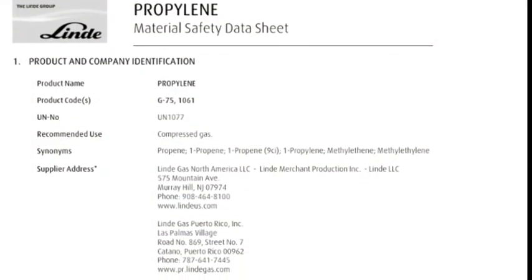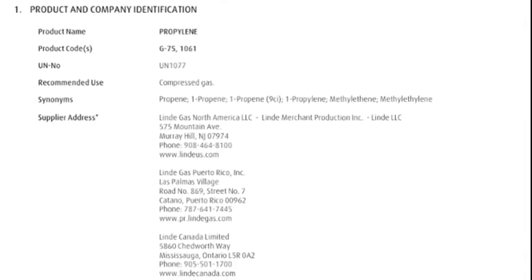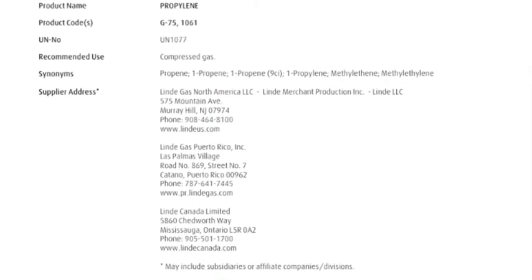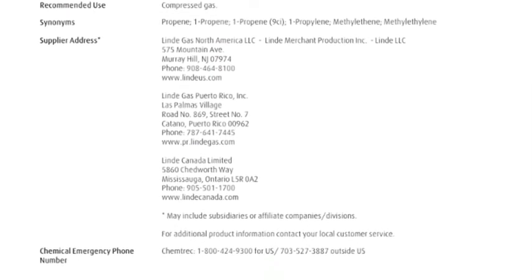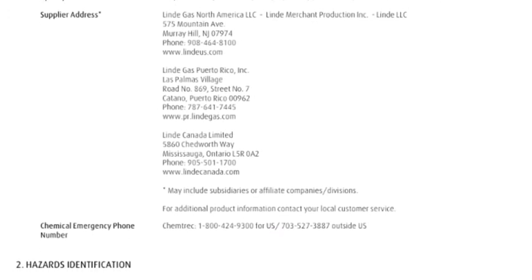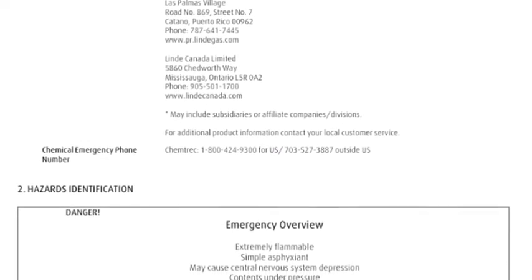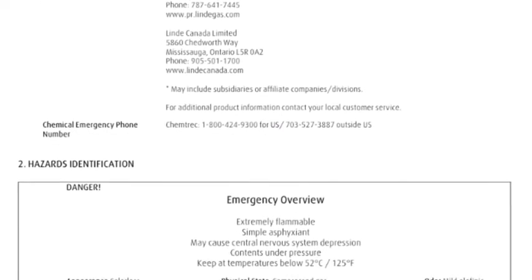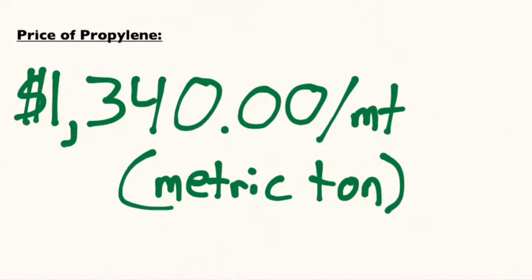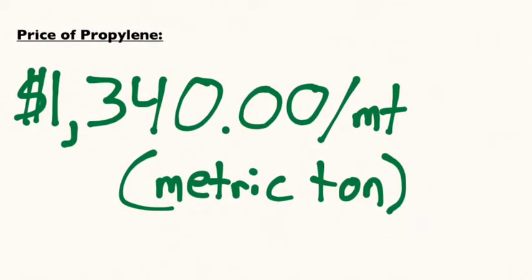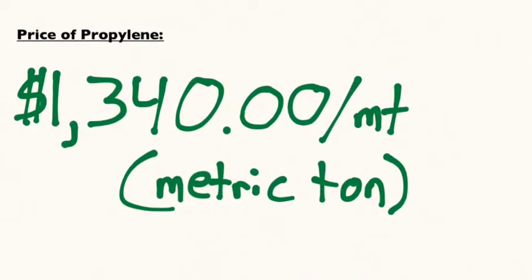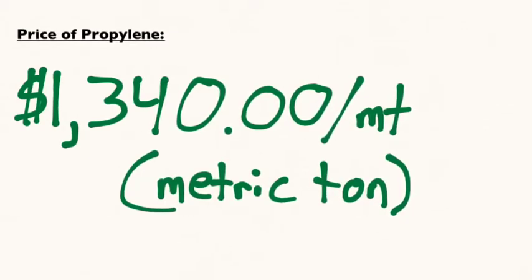Here is the first page of propylene's material safety data sheet. As you can see, the first hazard of propylene is extremely flammable and very dangerous. Platt's Global Petrochemical Index lists the price of propylene at about $1,340 per metric ton.